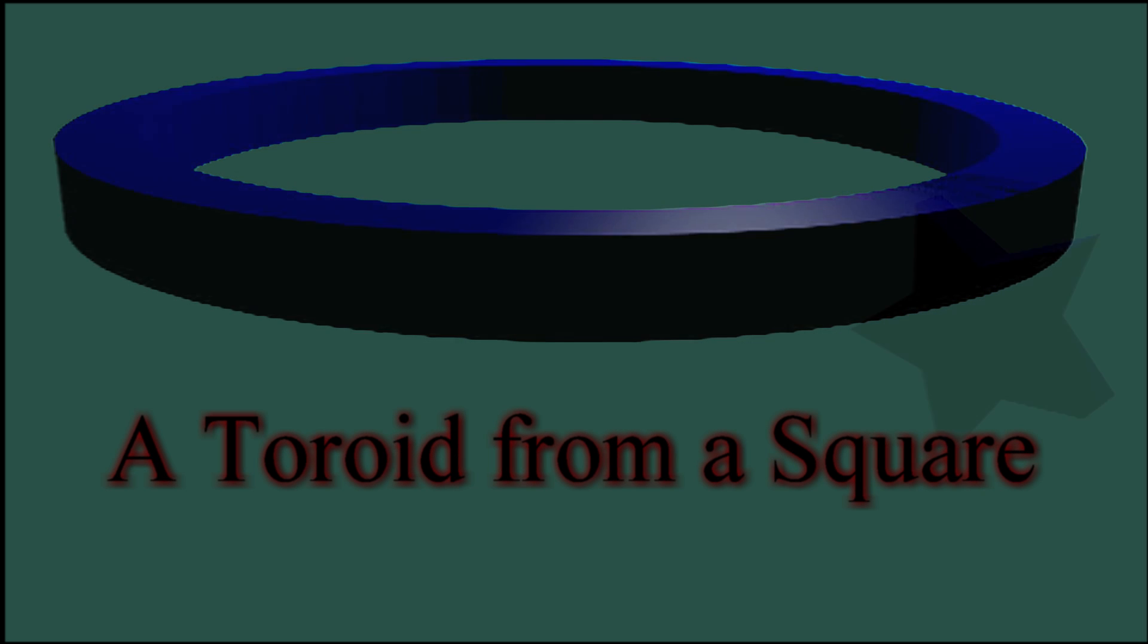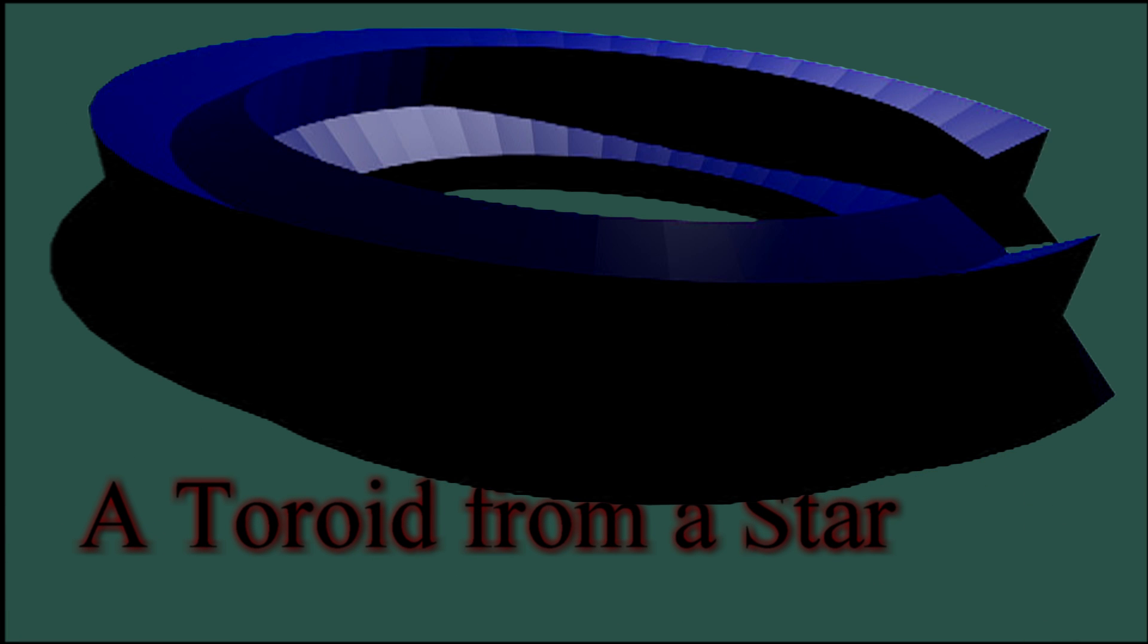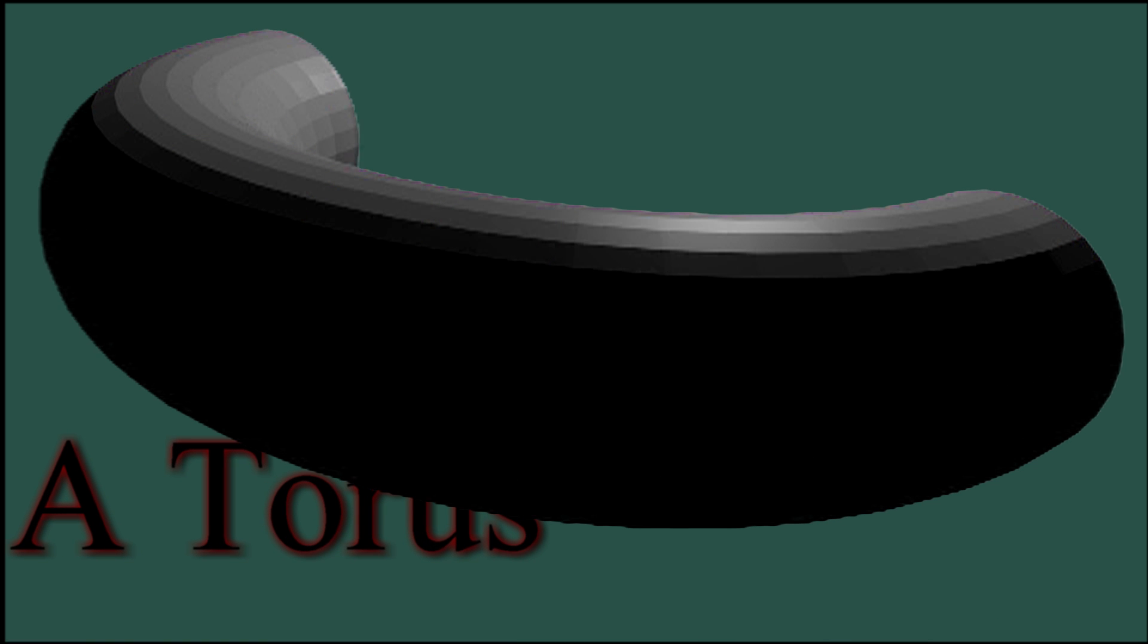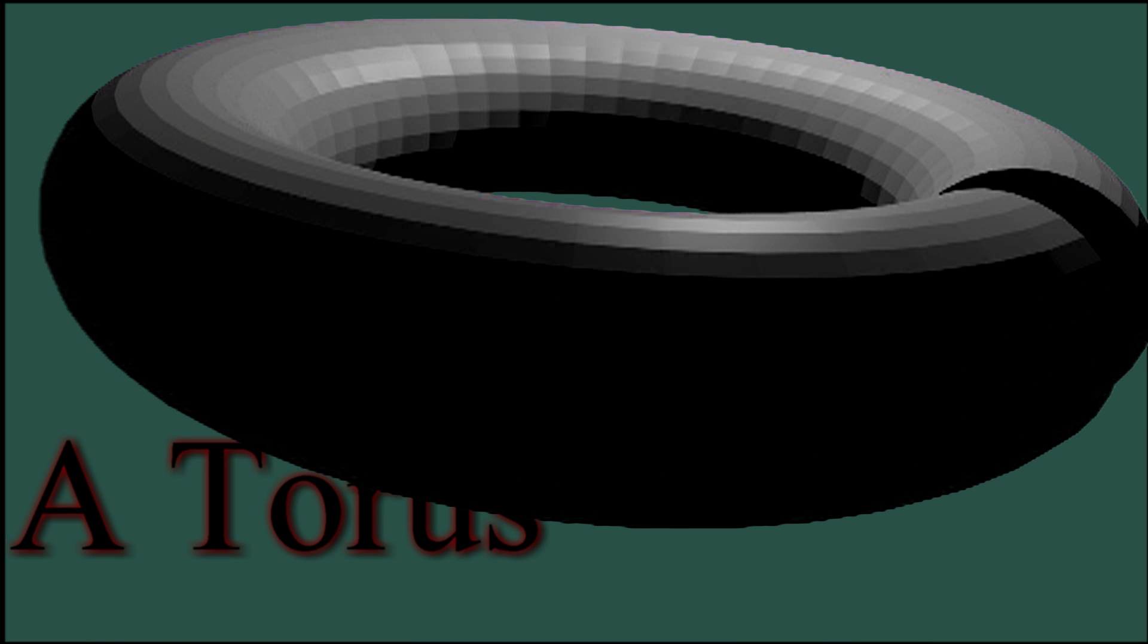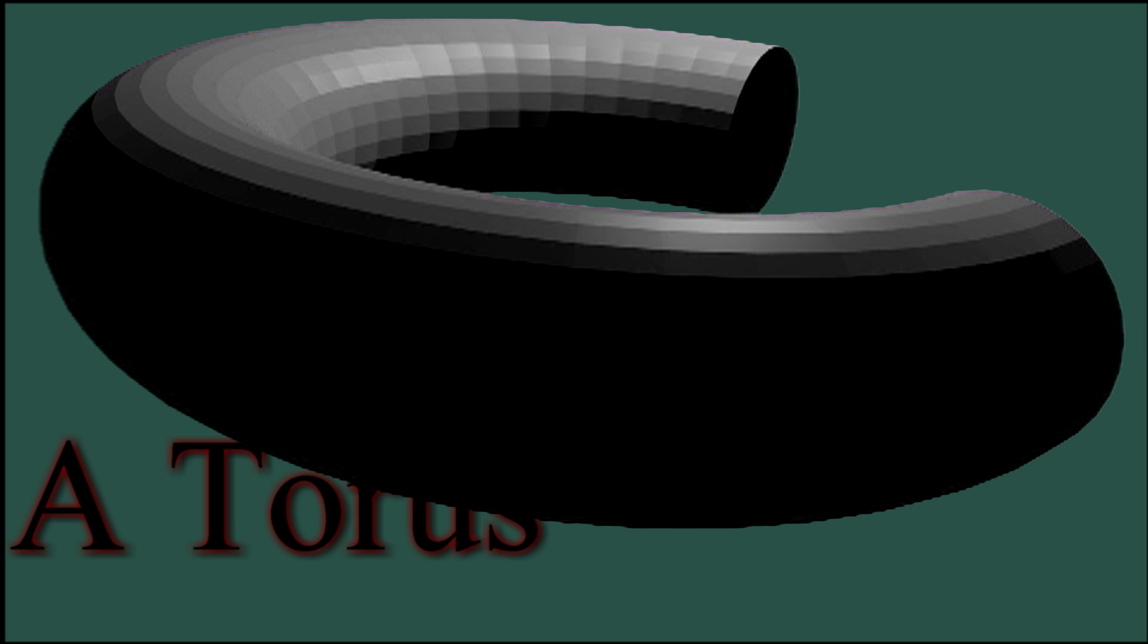A toroid is any object created by taking a surface and revolving it around a circle so you end up with a sort of ring shape. A torus is where that's a circle and even it has some non-obvious versions. A torus has two types of radius: the major radius which is what you rotate it around to get the shape, and a minor radius which is the radius of the circle inscribing the torus.